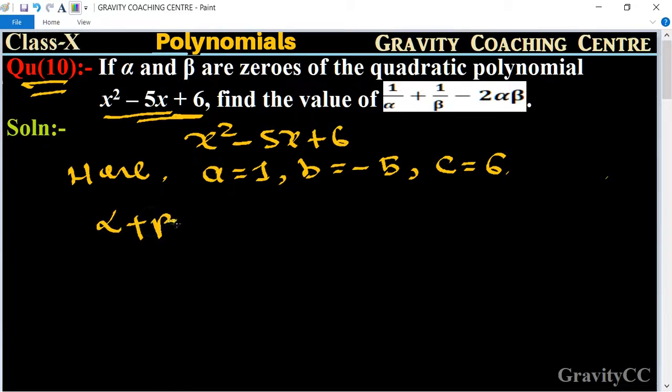Now we find the sum of zeros. Sum of zeros equals -b/a. The value is -(-5)/1, which equals 5.